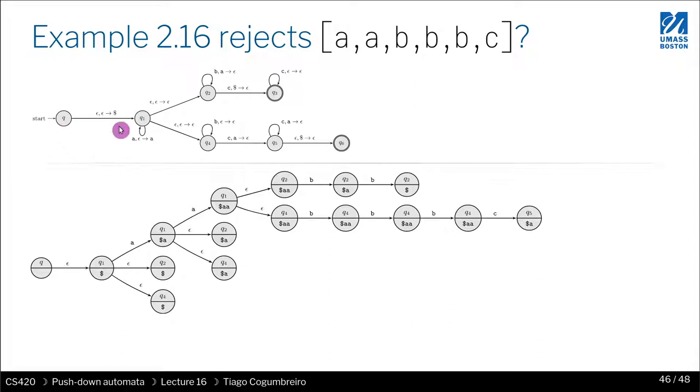So what happens is first we read the two As and we're in Q1. We have two As on the stack. If we go this way, what we do is we read two Bs but now we're at the point where our stack has just the sentinel there and we need to read the third B.